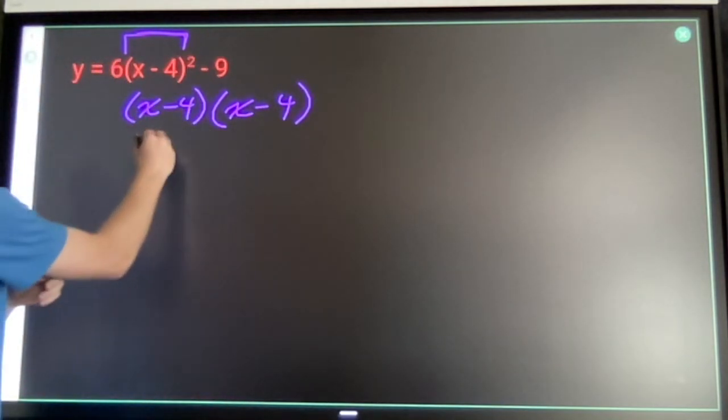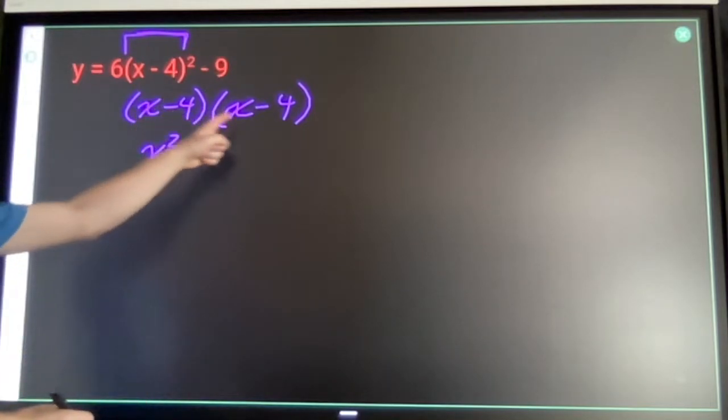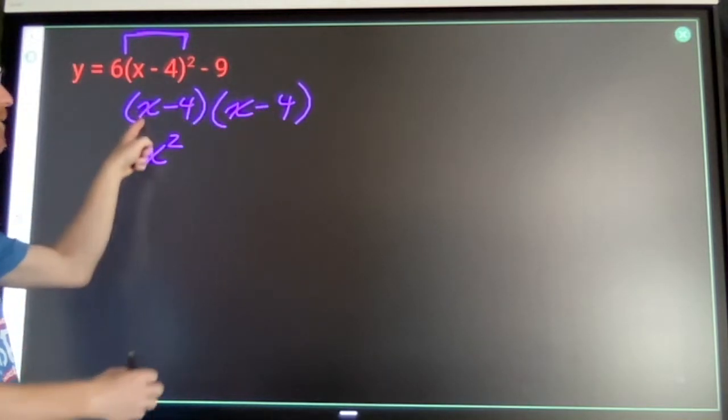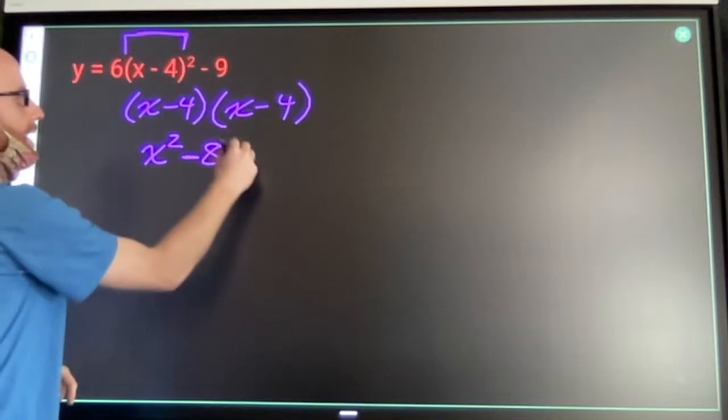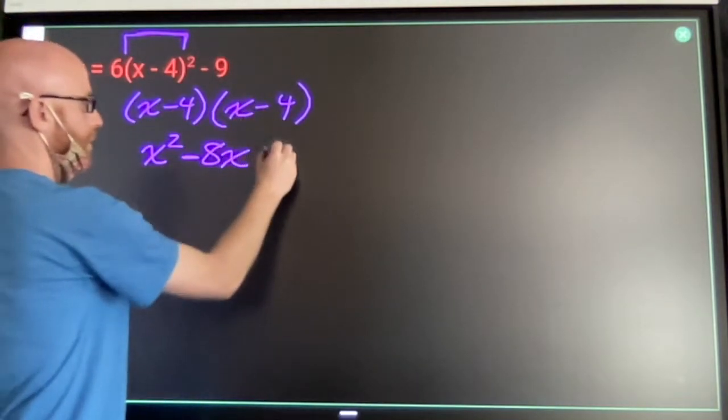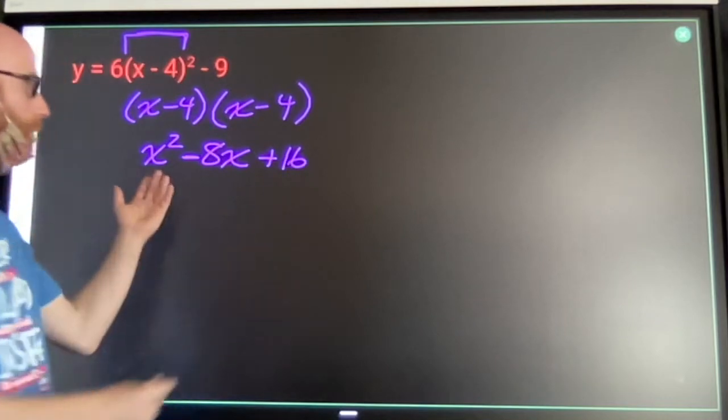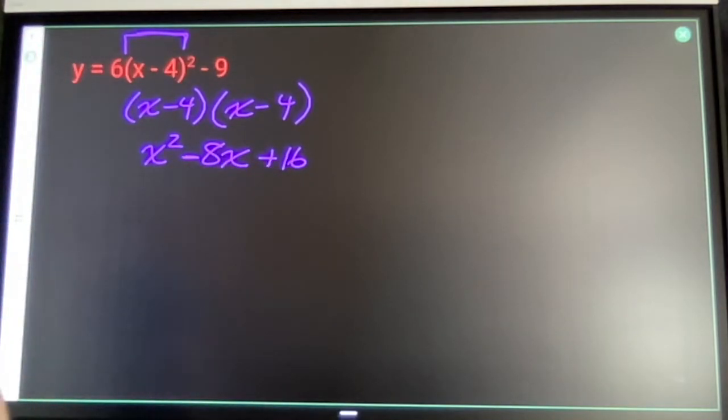we've got our x times our x, our negative 4 times our x, another negative 4 times x, so that's negative 8x's, and then negative 4 times negative 4 is 16. I end up with a perfect square trinomial.